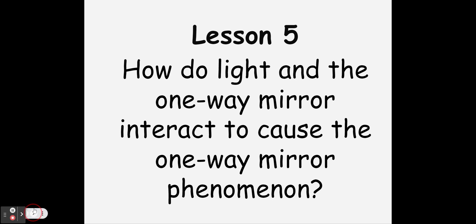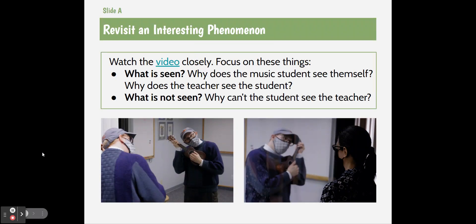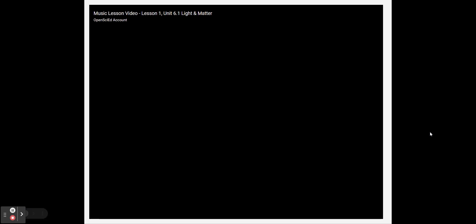So in lesson five, we are first going to look at this video closely. And as we look at the video, we're going to look at these things: what is seen, what is not seen, and all the things we've learned in lessons one through four. Why does the music student see themselves, and why doesn't the teacher see the student? As we go through the video, I'm going to walk you through parts of it.